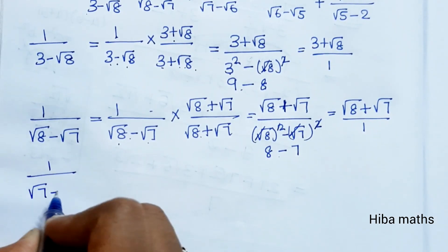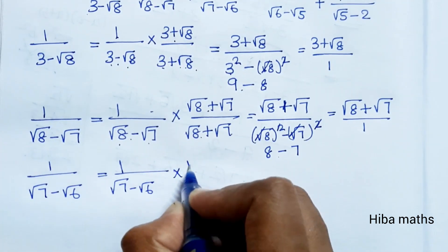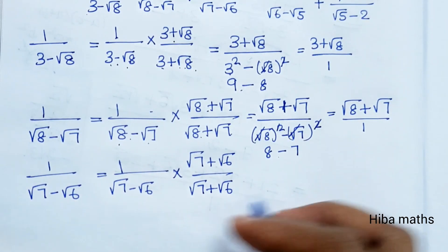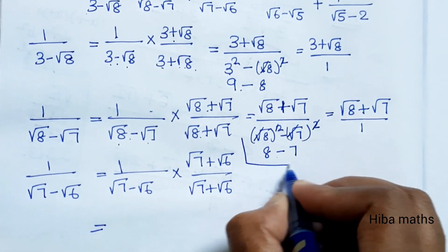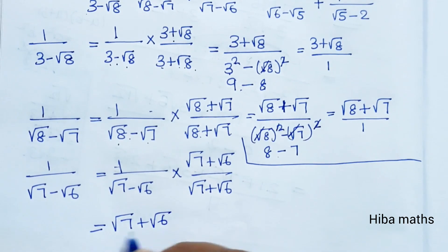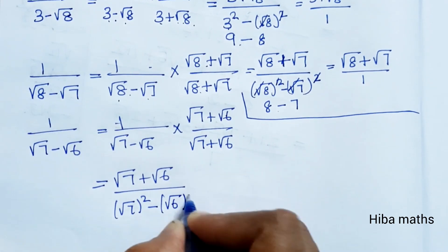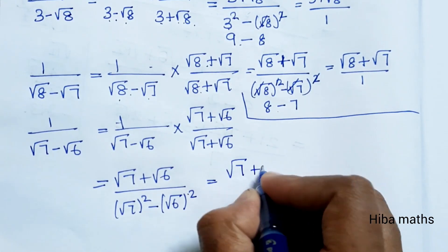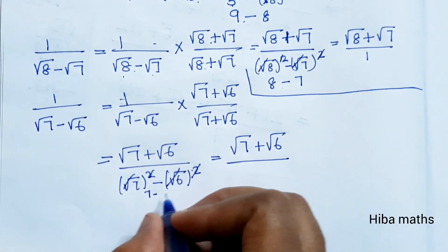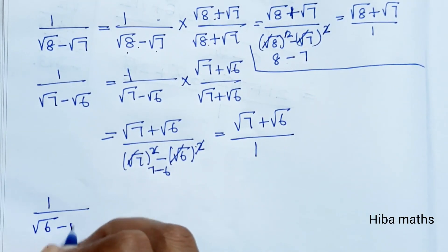For the third term, 1/(√7 - √6), multiply by the conjugate (√7 + √6): we get (√7 + √6) divided by (a - b)(a + b) = a² - b². That gives (√7)² - (√6)² = 7 - 6 = 1. So the third term simplifies to (√7 + √6)/1 = √7 + √6.